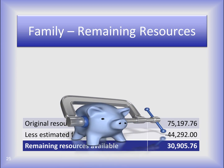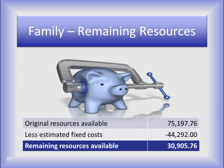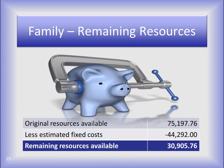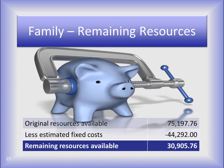The family looks at how much of the resources available remains after subtracting fixed costs. Our original resources available, $75,197.76, less the fixed costs, leaves us with $30,905.76 left to budget. The family gets to decide what to do with the rest of this money.